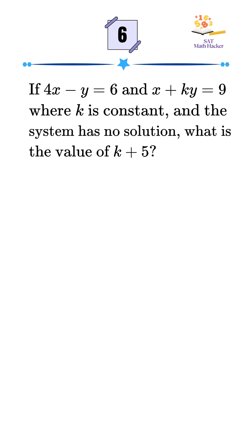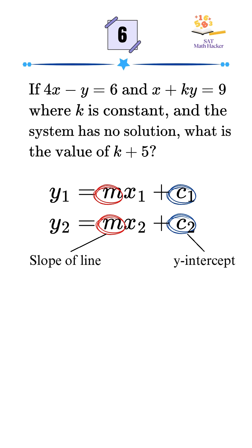The real key here is understanding that a system has no solution when the lines are parallel, meaning that they have the same slope but different y-intercepts. Let's solve it.